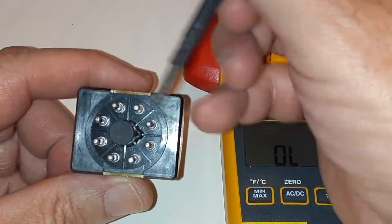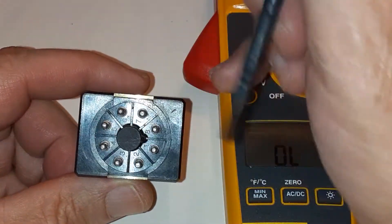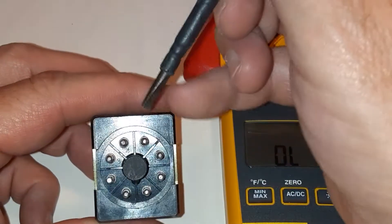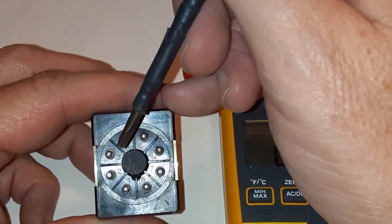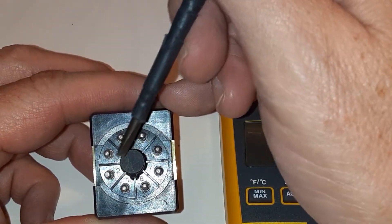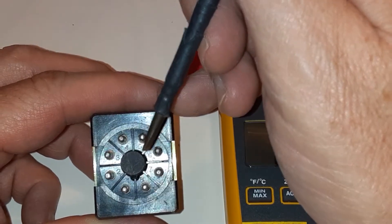If we look on the bottom, you can see there's some little numbers down there. They're really hard to see, but there they are. Those are the terminal numbers one through eight. This is an eight-pin relay.